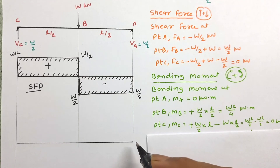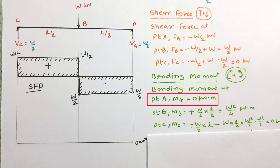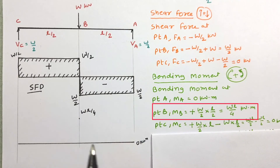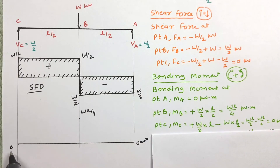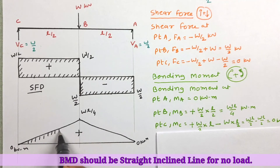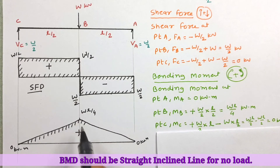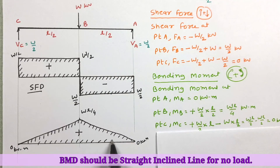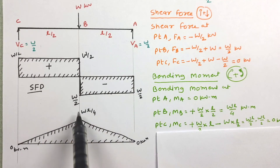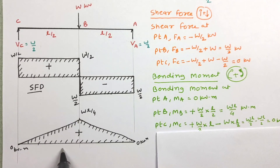Now let us draw the bending moment diagram. At point A the bending moment is 0 kN·m. At point B the value is WL/4, and at point C it is again 0 kN·m. Joining these values, there is a positive triangular moment of WL/4 at the midpoint of the beam. Maximum bending moment acts at B, where shear force is 0. This is the BMD.